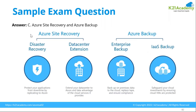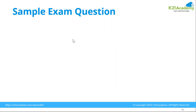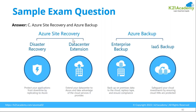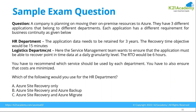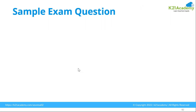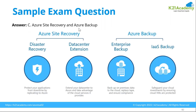The correct answer is B: Azure Site Recovery and Azure Backup. There was an on-screen labeling error showing C, but the correct choice is B. So people who selected B are correct. The option is Azure Site Recovery and Azure Backup — option B, not C.